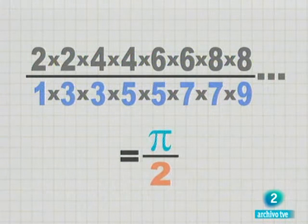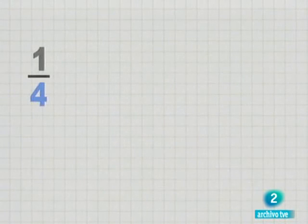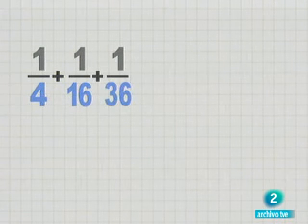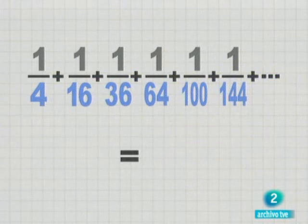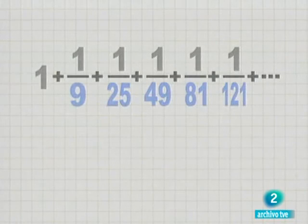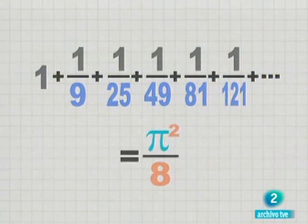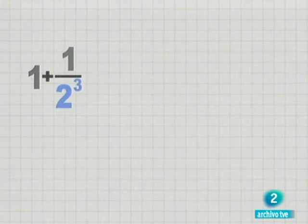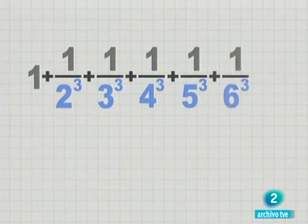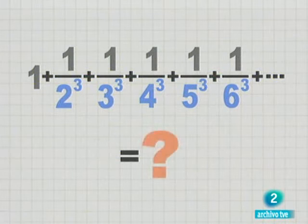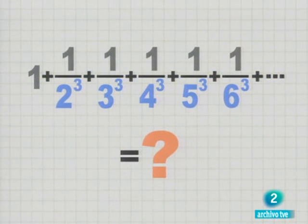Pi aparece como producto de números pares e impares. También aparece pi en la suma de los inversos de los cuadrados de los números pares. Y volvemos a encontrar a pi en la suma de los inversos de los cuadrados de los números impares. No es tan fácil obtener estos resultados, sobre todo si tenemos en cuenta que en la actualidad aún no sabemos cuánto vale exactamente esta otra serie, formada por los inversos de los cubos de los números naturales.